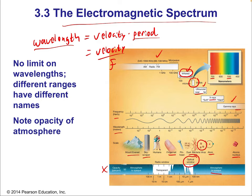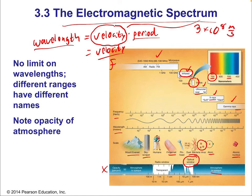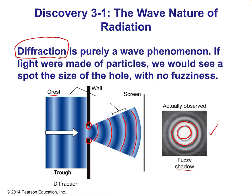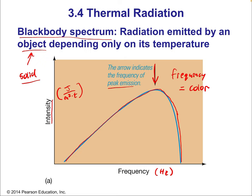Wavelength equals velocity divided by frequency. Since the speed of light is always 3 × 10⁸ m/s, if you know the wavelength you know the frequency and vice versa. So talking about red as having a wavelength of 700 nanometers or a specific frequency are equivalent statements. That's very inherent in how this chapter works — if you know the frequency, you know the wavelength. So that frequency on the black body curve is the color. A temperature corresponds to a color.